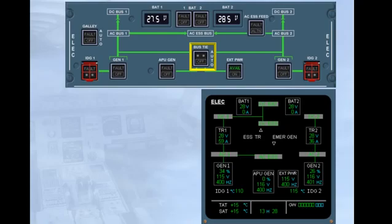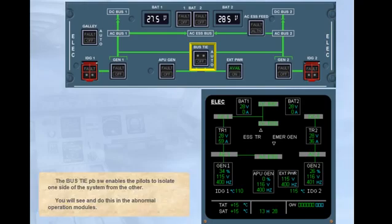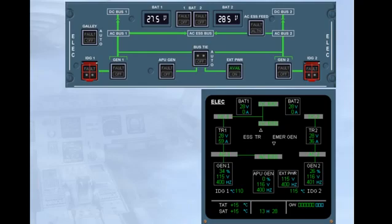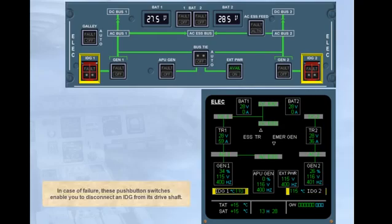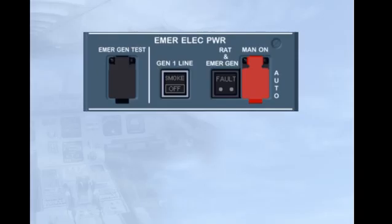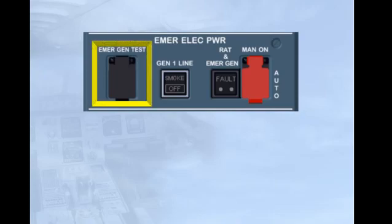The bus TIE push-button switch enables the pilots to isolate one side of the system from the other. You will see and do this in the abnormal operation modules. In case of failure, these push-button switches enable you to disconnect an IDG from its drive shaft. The controls and indications on the emergency electrical power panel will be covered in the abnormal operation modules. There is one exception: the emergency generator test switch is used by maintenance only to test the emergency generator.